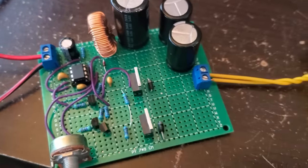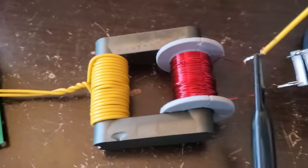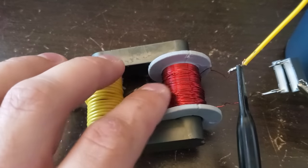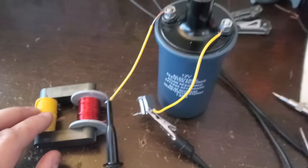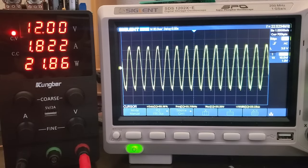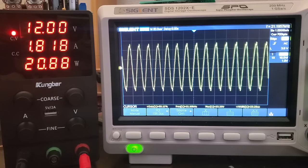To solve this, I rewound the secondary of the isolation transformer to have almost the exact same inductance as the primary of the ignition coil, and tested the circuit again. Matching the inductances seemed to work, because this time I got almost 300 volts across the ignition coil primary at resonance.